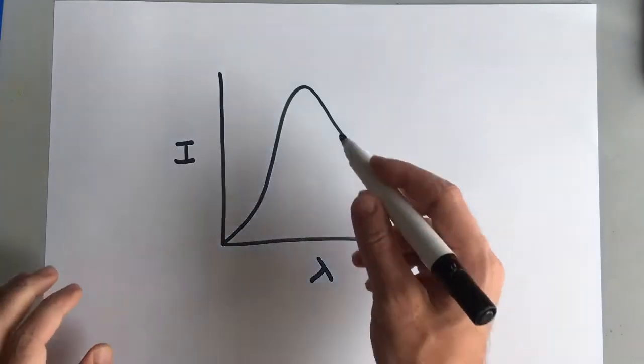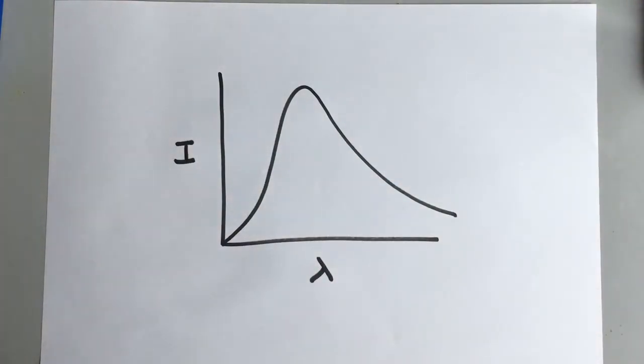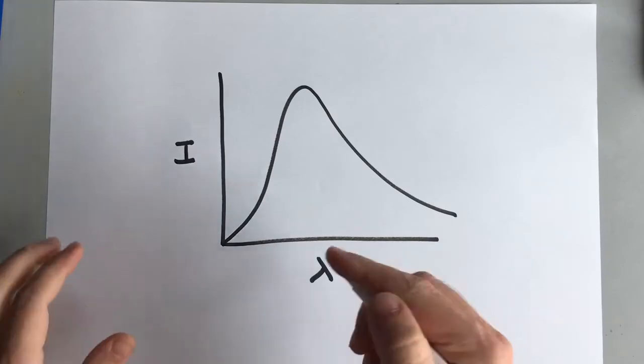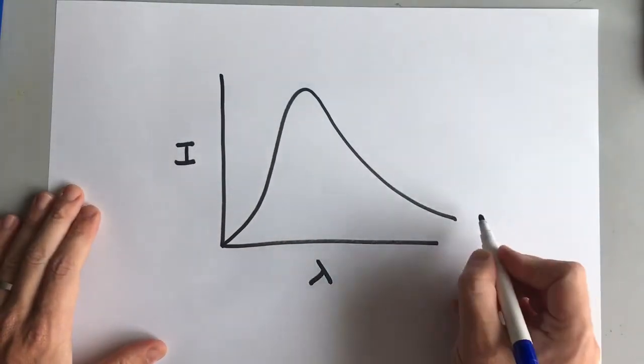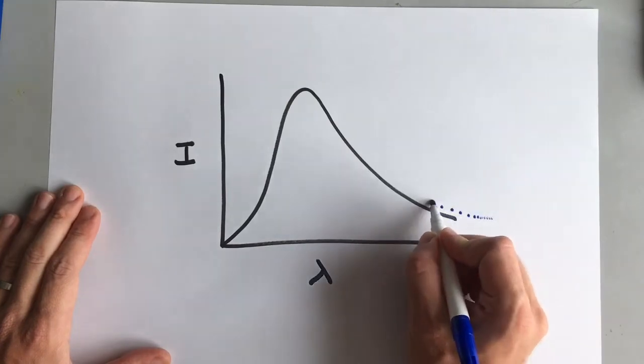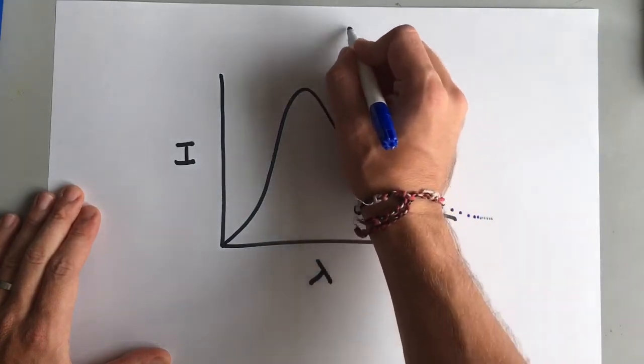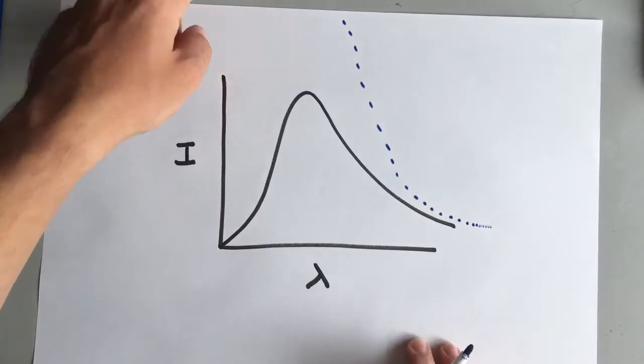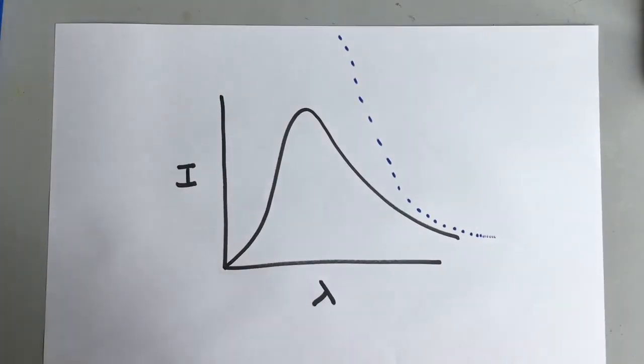So we know that blackbodies look like this but if we use classical physics to work out what the shape of this graph should be, it's kind of similar at these longer wavelengths but then it goes up and up and up until it reaches an intensity of infinity.